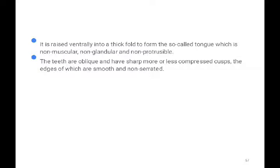The shark's tongue is non-muscular, non-glandular, and non-protrusible. In our case, the tongue has many mucous glands, is muscular, and is glandular. In the shark, the buccal cavity floor is slightly raised, forming just a thick fold — the so-called tongue — which is non-muscular and non-glandular.